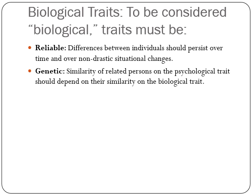Biological traits should be genetic — the similarity of related persons on the psychological trait should depend on their similarity on the biological trait. There should be a linkage between what they've inherited biologically and what they experience or demonstrate psychologically.